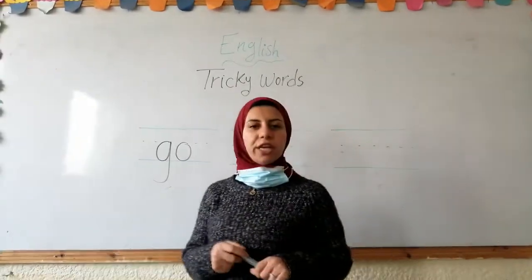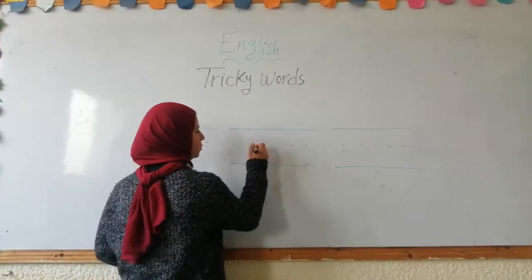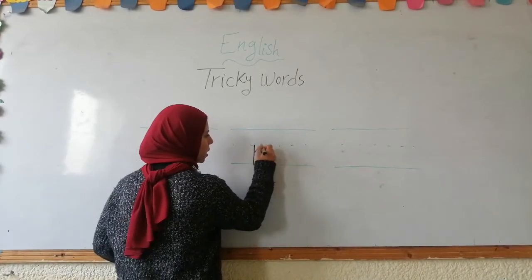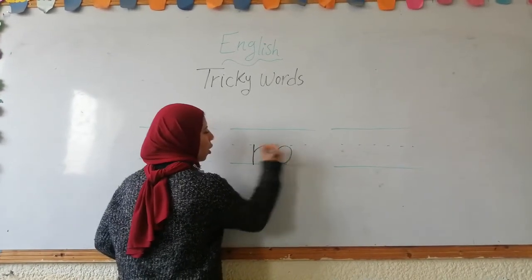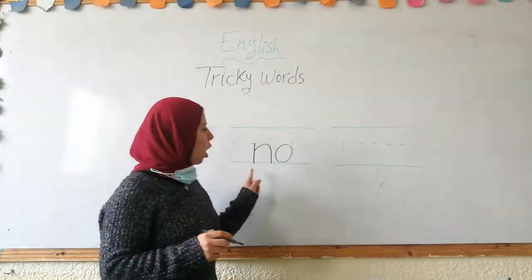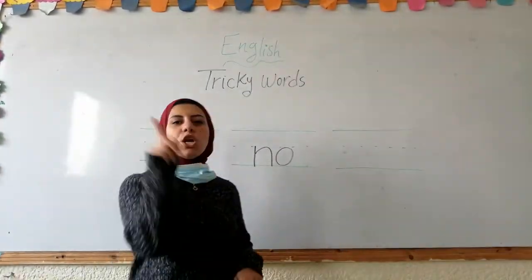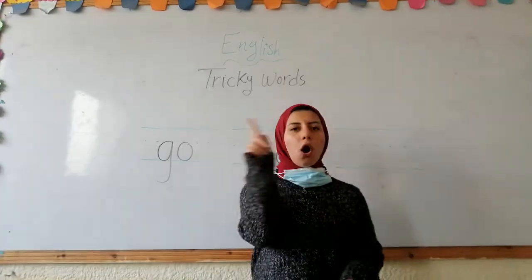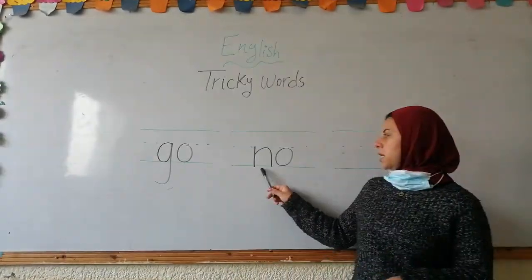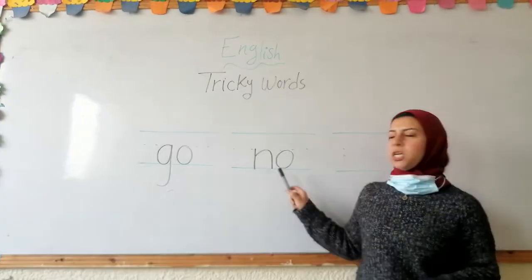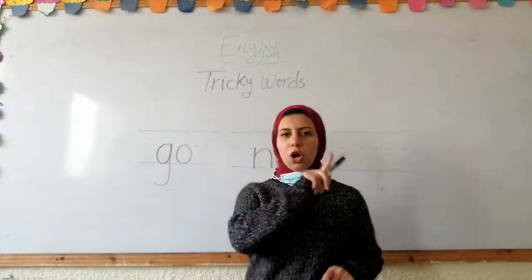The second tricky word is: N, O — no. We spell it N, O — no. No, no, no.